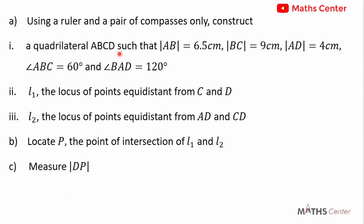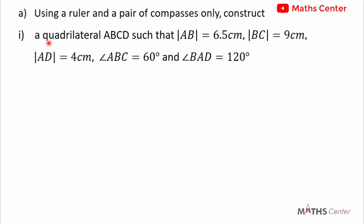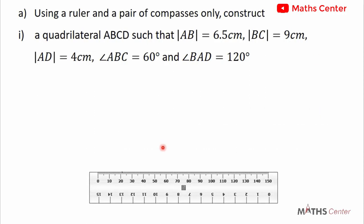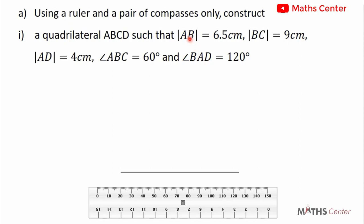Let's begin by constructing the quadrilateral ABCD. We have been given the dimensions of side AB, side BC, and side AD, as well as two interior angles: angle ABC and angle BAD. We will select side AB, which has length 6.5 cm, as the base. I'll take the ruler and draw a long horizontal line.